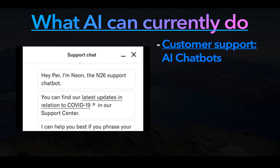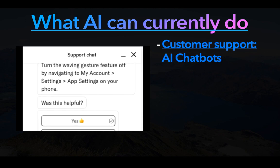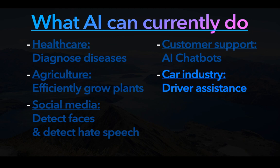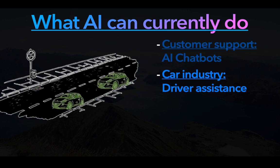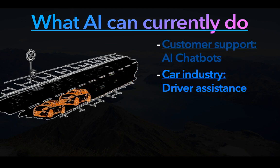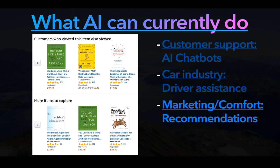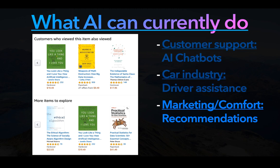Companies can use AI chatbots for customer support — as the online bank N26 does — and only redirect you to a human if the chatbot cannot help you. In the car industry, AI is used in driver assistance systems that help keep you in your lane and maintain safe following distance. In marketing and comfort, AI can make recommendations on what you might like to buy, watch, or read. Amazon's 'customers who viewed this item also viewed' is powered by AI, as are Netflix recommendations. Studies show that 75% of series and films watched on Netflix were recommended by their algorithm, so this seems to work really well.